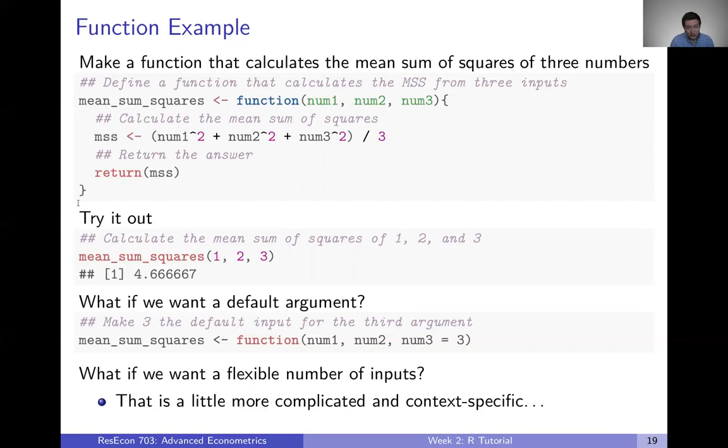So let's try it out. Let's calculate the mean sum of squares of one, two, and three. So as long as we've actually called this code into memory, then we can go ahead and call our function, mean sum squares, give it the inputs of one, two, and three, and under the hood it's going to do this math for us and return the answer. So we're going to call mean sum squares one, two, three, and get four and two thirds back out. That's exactly what we wanted.